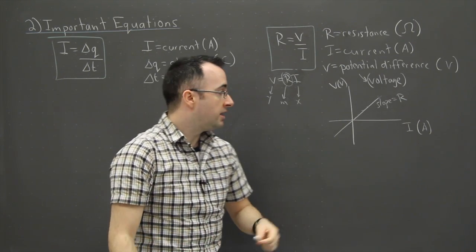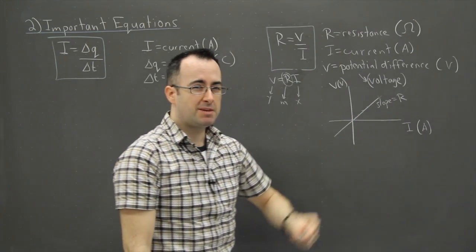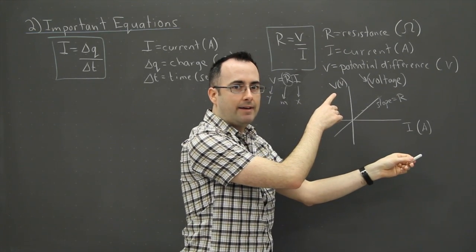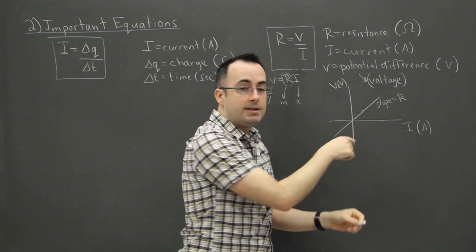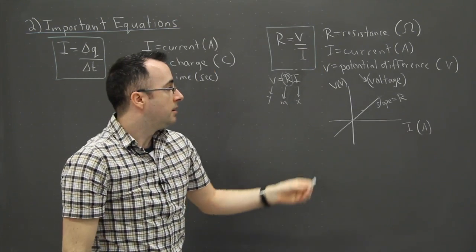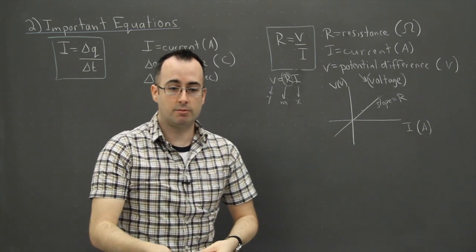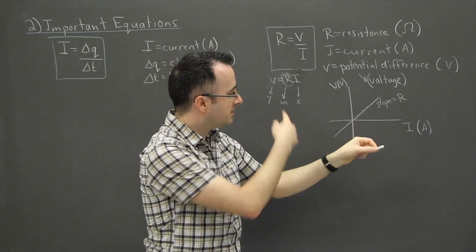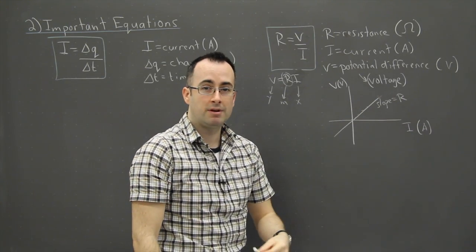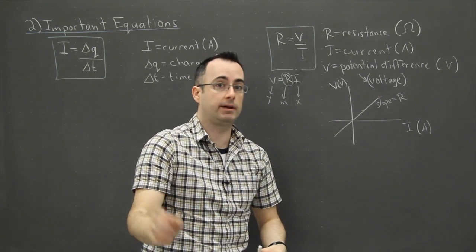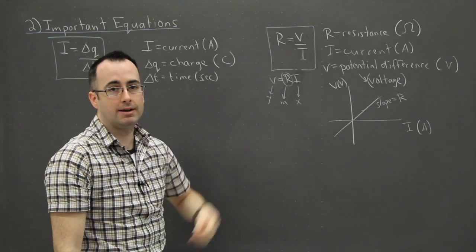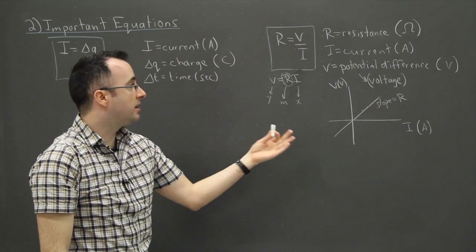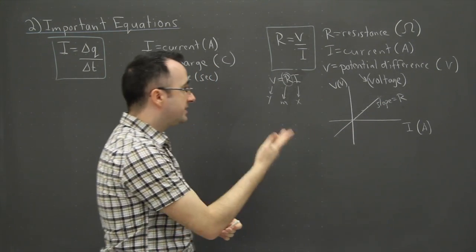Something can be non-ohmic — that means the graph curves instead of being straight. Keep in mind that on IB exams, they often switch the axes and show a graph of I against V instead. Still expect a straight line for ohmic materials. But some things heat up as more power goes through them, causing the graph to curve up or down. Basically, anything that curves is non-ohmic — it's not following Ohm's Law exactly.